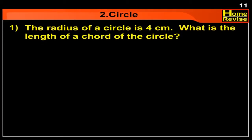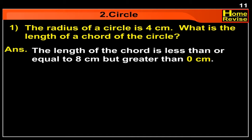The radius of a circle is 4 cm. What is the length of a chord of this circle? Answer: The length of the chord is less than or equal to 8 cm but greater than 0 cm.